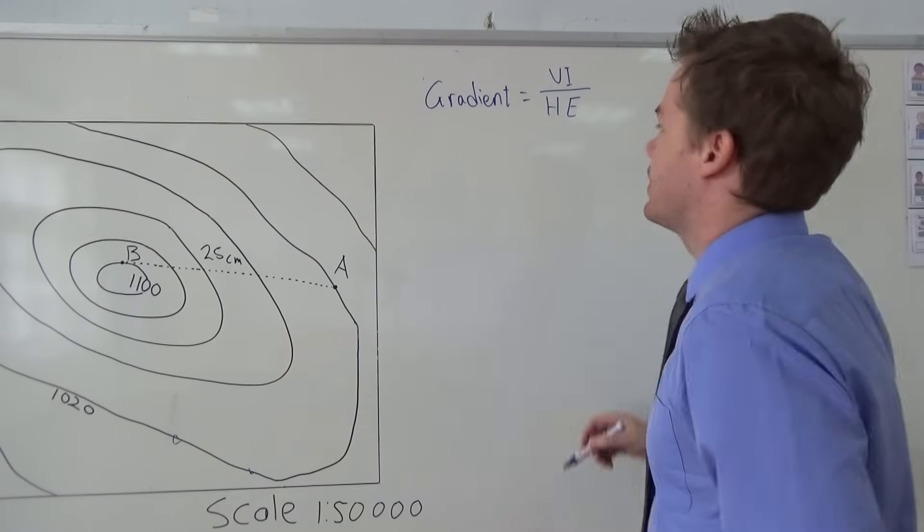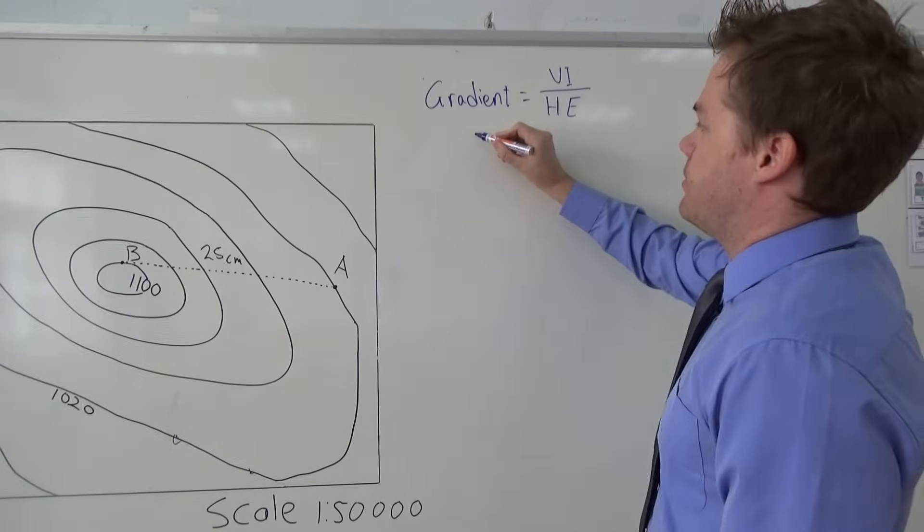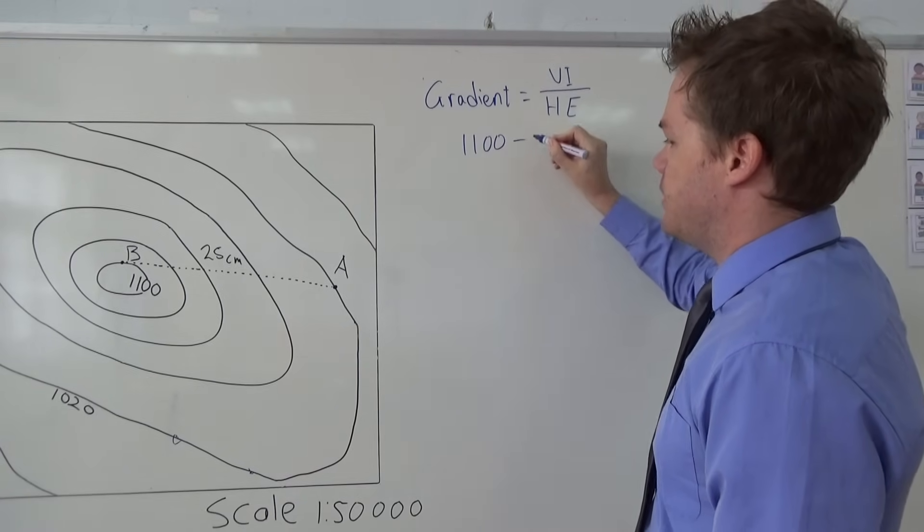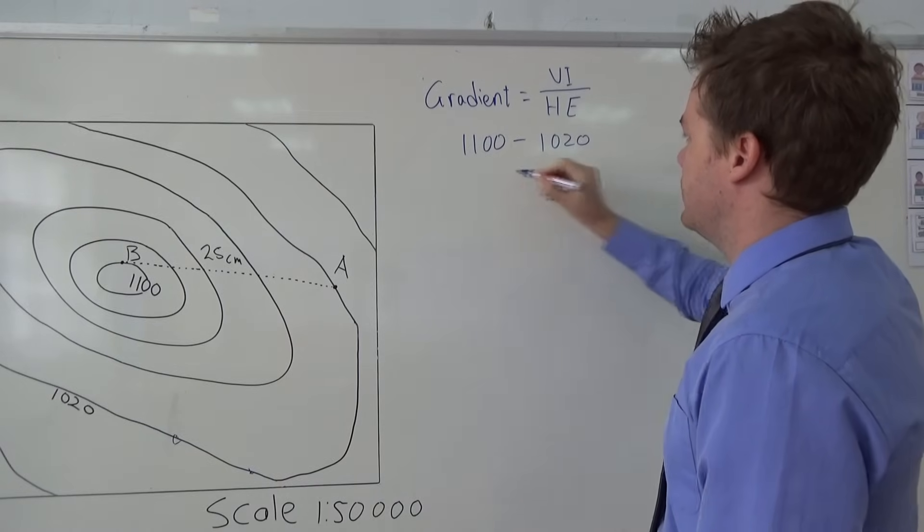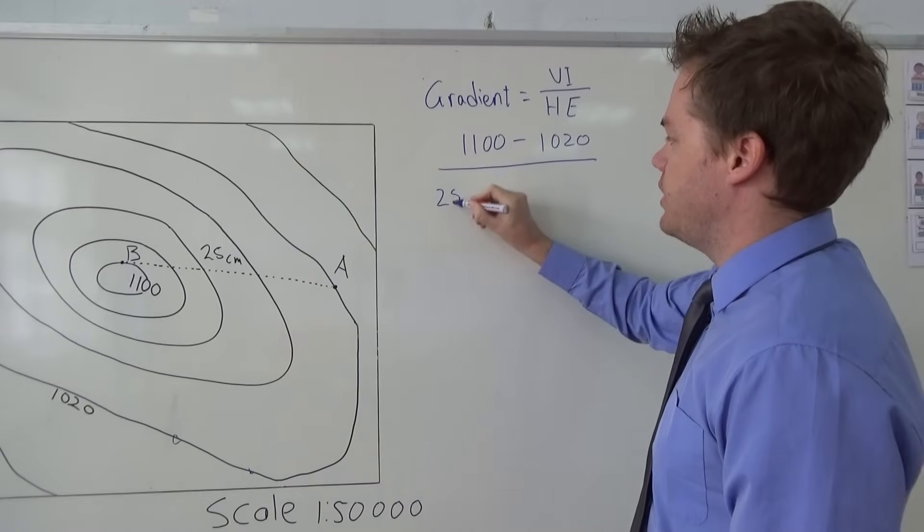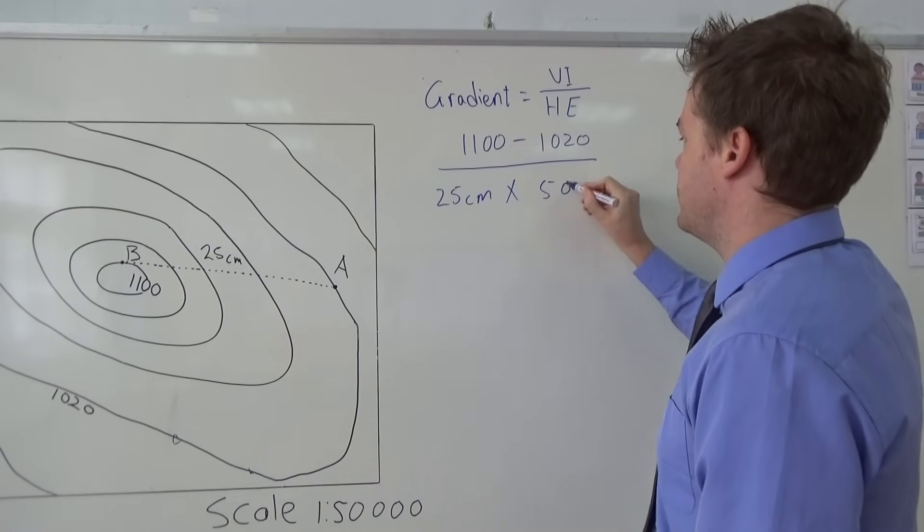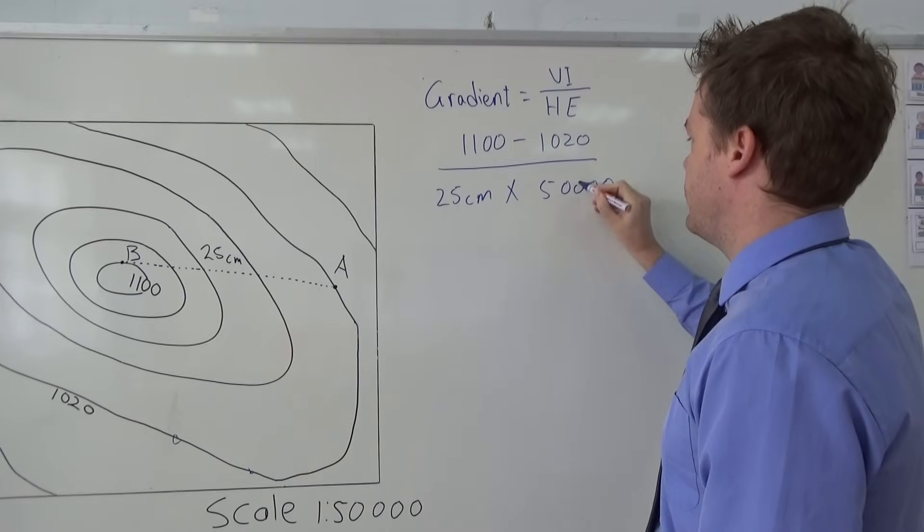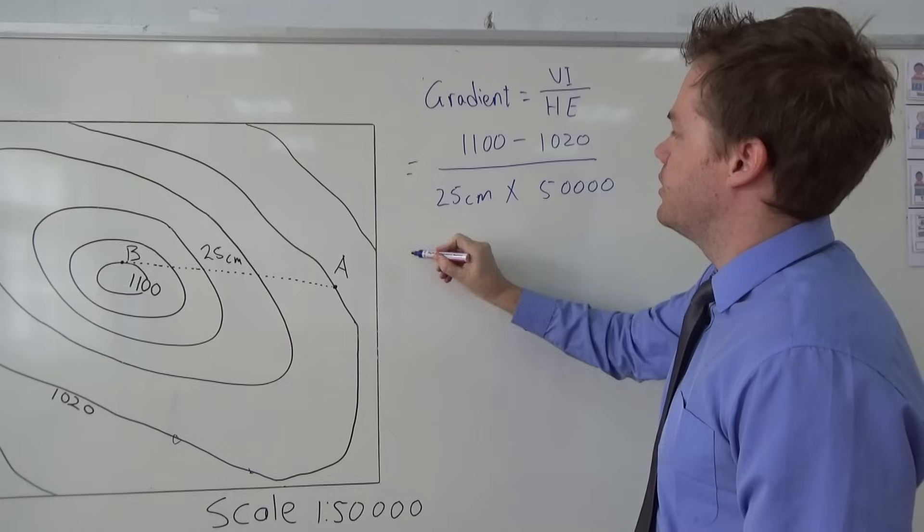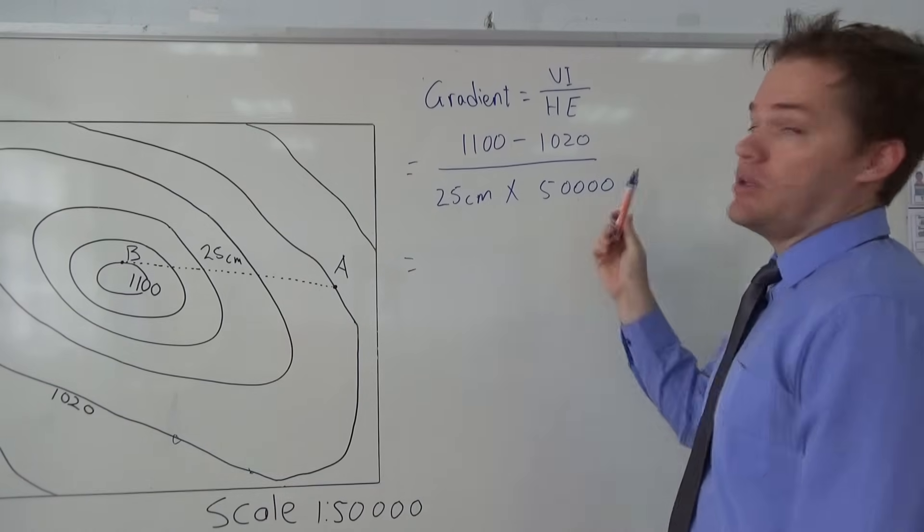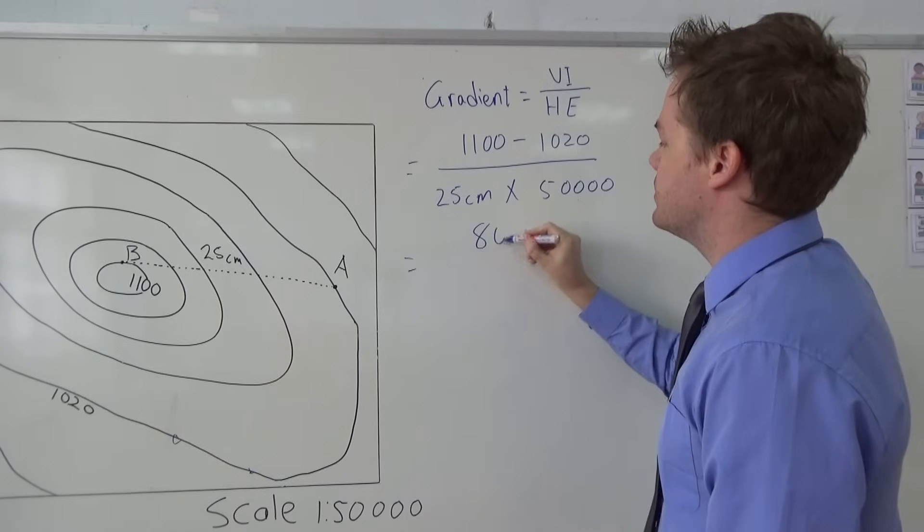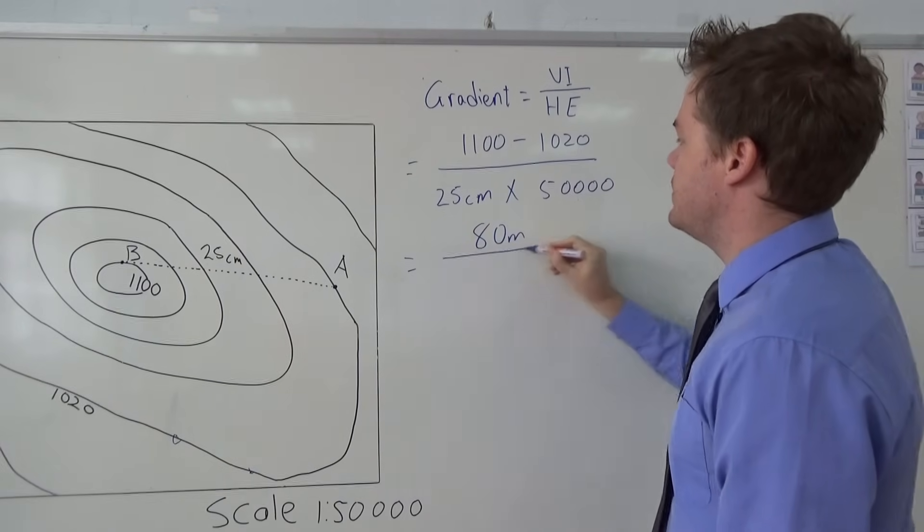So let's look at how it's done. Firstly, we want to find the difference in height, so it's 1100 minus 1020. And here we are going to calculate the distance: it's 25 centimeters times 50,000, so remember we always use the scale when we calculate the real distance. Now 1100 minus 1020 is 80 meters. That's very easy.